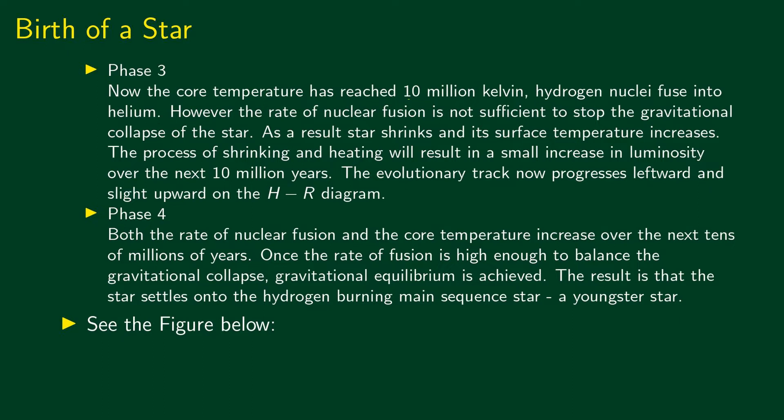In phase 3, the core temperature has reached about 10 million Kelvin and the conditions are right for hydrogen fusion — hydrogen nuclei fuse into helium. However, the rate of nuclear fusion is not yet sufficient to stop the gravitational collapse of the star, so the star continues to shrink and contract, causing the temperature to increase and the rate of fusion to also increase. The evolutionary track now progresses leftward on the HR diagram as the temperature increases.